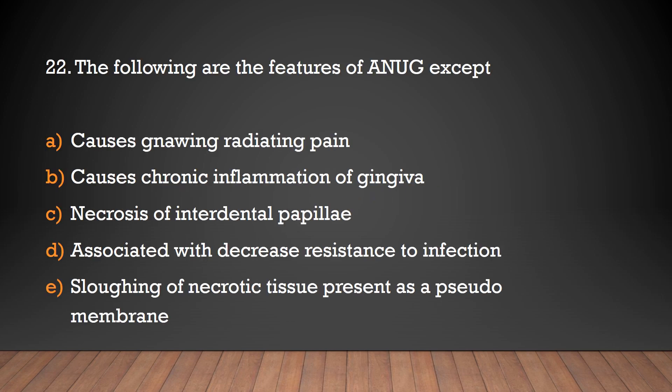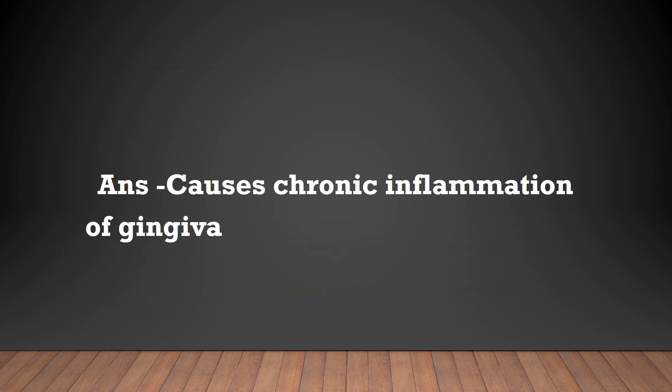The following are the features of ANUG except: causes gnawing radiating pain, causes chronic inflammation of gingiva, necrosis of interdental papillae, associated with decreased resistance to infection, or sloughing of necrotic tissue present as a pseudomembrane? The answer is: causes chronic inflammation of gingiva.